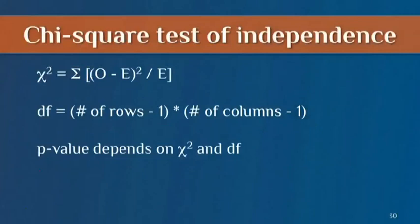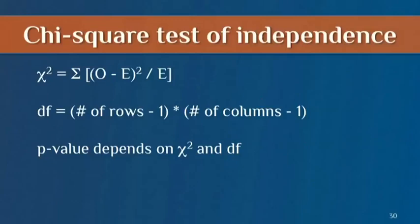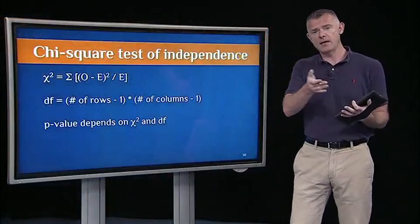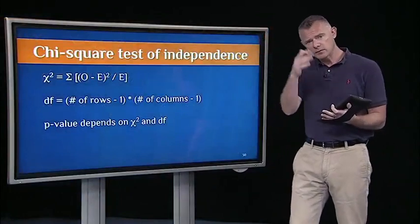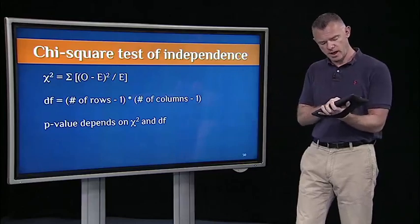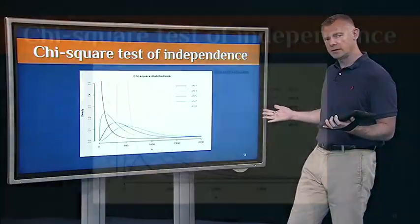Degrees of freedom is slightly different because now we have rows and columns — it's the number of rows minus one times the number of columns minus one. The p-value is determined by the chi-square value and degrees of freedom, and that comes from the family of sampling distributions of chi-square. That's conceptually analogous to the family of t-distributions and the family of f-distributions.